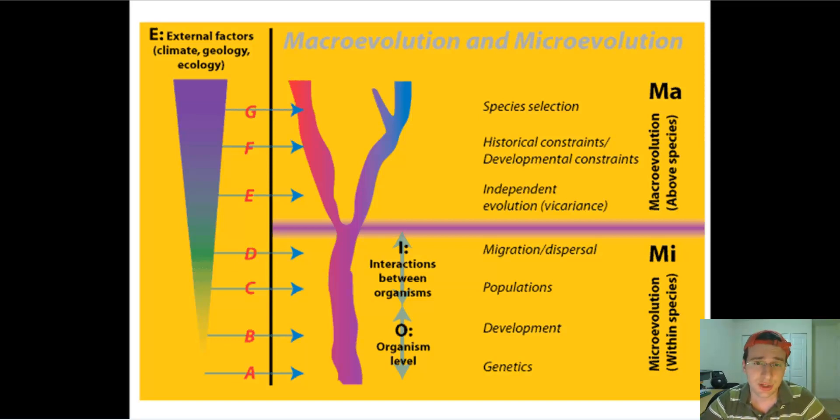It's all mutations leading to changes in the DNA code selected for by environmental pressure, which we call natural selection, or by random events, which we call genetic drift. There's also gene flow when genes from one population move into the other one. Regardless of what you look at, all of these changes when accumulated at large levels will cause macroevolution. So it's all the same thing.